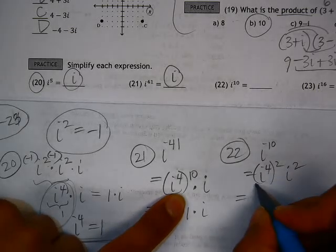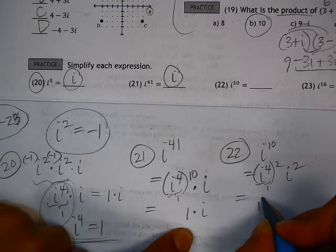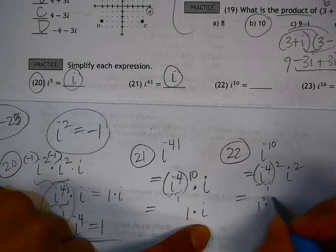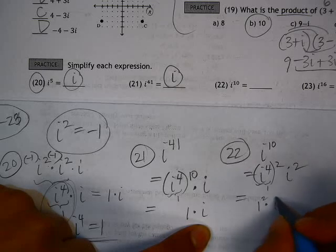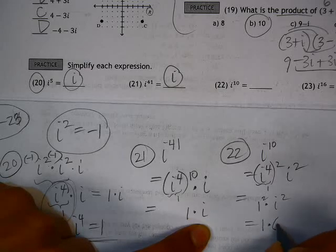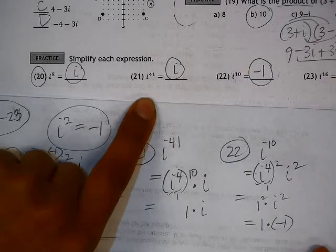And again, this is just equal to 1. So 1 squared, which is 1, times i squared. So that gives us 1 times i squared is equal to negative 1. So negative 1 is our answer.